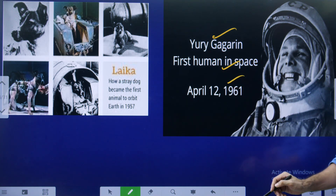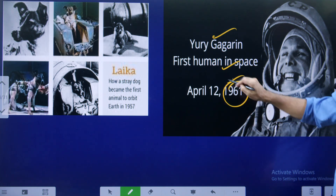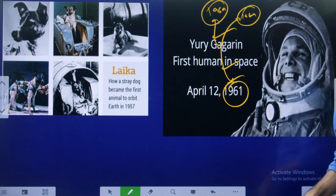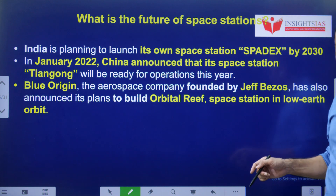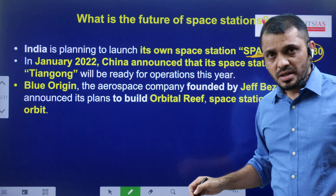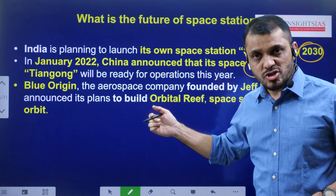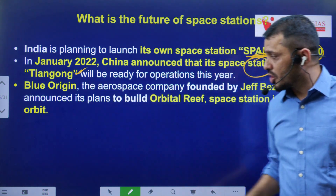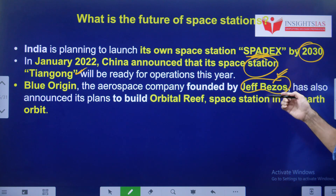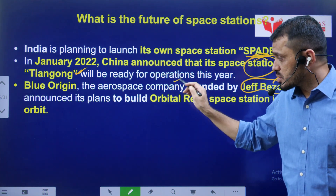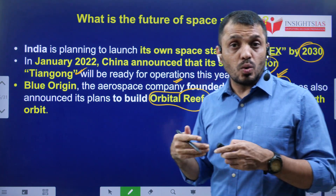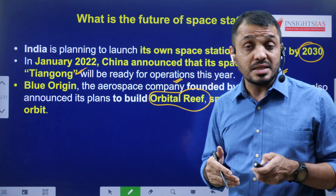Yuri Gagarin was the first human who went to space in 1961. ISRO was established in 1969. India's Rakesh Sharma also went to space. India is also planning to launch its own space station, known as Spadex, by 2030. In January 2022, China announced their plans of having their own space station. Related to private space, Jeff Bezos's Blue Origin - the aerospace company - has a project named Orbital Reef, which is about their own space station. These are some of the space station aspirations related to various countries and corporates.